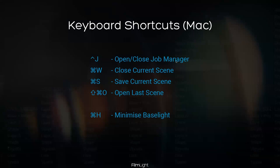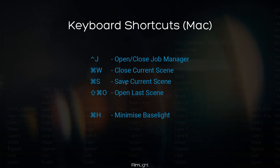The job manager window can be opened and closed using the shortcut Control+J. These are shortcuts on a Mac — on a Linux system the Windows key is used instead of the Control key, and on Mac the Command key replaces Control on Linux, so it's slightly different but essentially the same. To close the current scene: Command+W. To save: Command+S. To open the last opened scene: Shift+Command+O. Command+H minimizes Baselight to the desktop to let you access other applications.